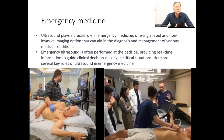In emergency medicine, focused assessment with sonography for trauma — also called the FAST examination — is performed using ultrasound to assess potential intra-abdominal or pericardial bleeding. It quickly evaluates specific areas including the abdomen, the pericardium, and the pleural spaces for any collection of blood.